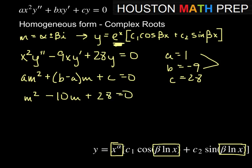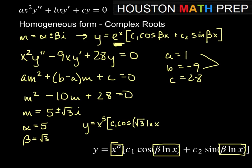We solve this by quadratic formula or completing the square, and we get that m equals 5 plus or minus square root 3i. For this example, alpha would equal 5, beta would equal the square root of 3. According to the form we have, our solution is y equal to x to the 5th times c1 cosine of beta times lnx, so that's root 3 lnx, plus c2 sine of root 3 ln of x.